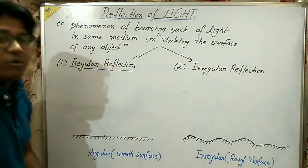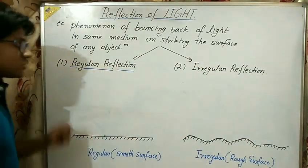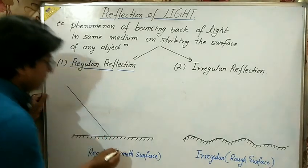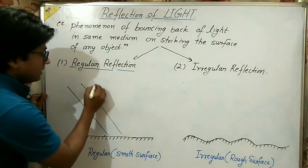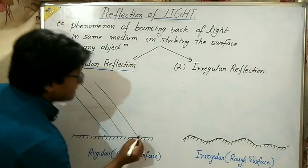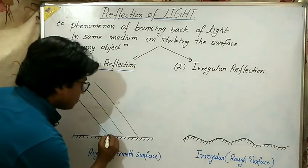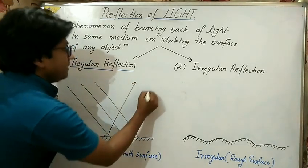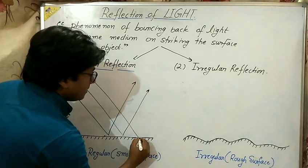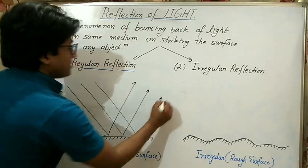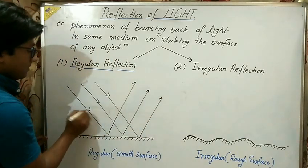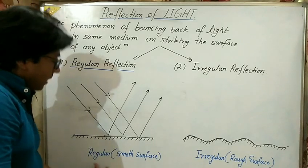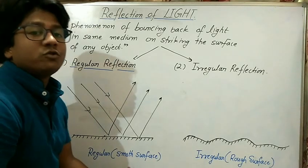For regular or smooth surfaces, we can impact several light rays like this — they all bounce back to the same medium in a fixed direction. This kind of reflection is called regular reflection.